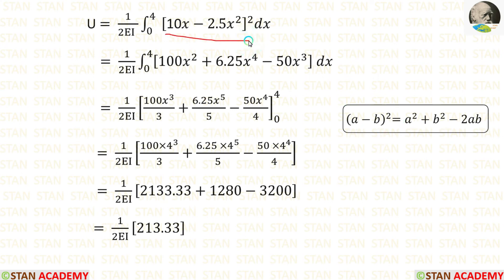But I have done manually also. Here, we can apply a minus b, the whole square formula. a minus b the whole square is equal to a square plus b square minus 2ab. Using the formula, we will get this. Then we can integrate. When we integrate x square, it will become x power 3 by 3. When we integrate x power 4, it will become x power 5 by 5. When we integrate x cube, it will become x power 4 by 4. After that, we can apply the limits. No need to apply the lower limit because when we apply the lower limit 0, the whole term will become 0. So no need to apply and waste the time. Only apply the upper limit. Instead of x, we have to apply 4. After the calculations, we are getting 213.33.